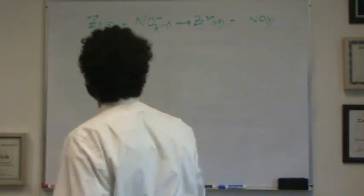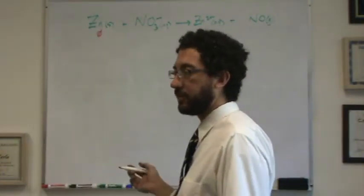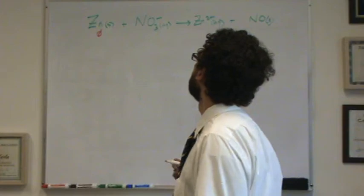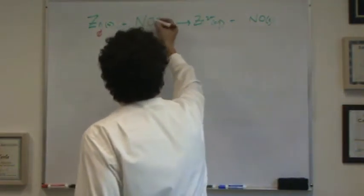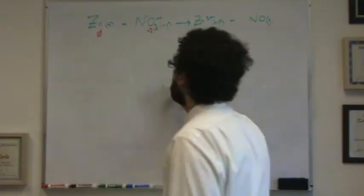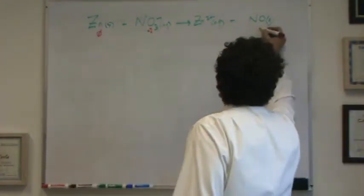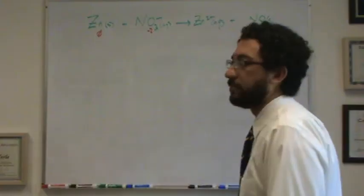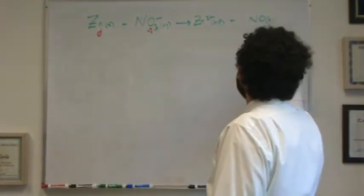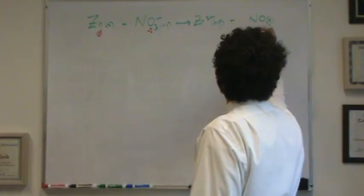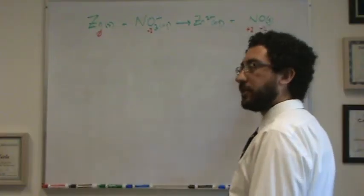Zinc is zero. How do I know zinc is zero? It's all by itself. It has a zero charge. NO3, we'll skip that first. Oxygen, we can do that one. That one's easy. Minus two. Whenever you see an oxygen, it's almost always minus two. And then, so if this oxygen is minus two, this nitrogen has to be plus two to balance the charge.